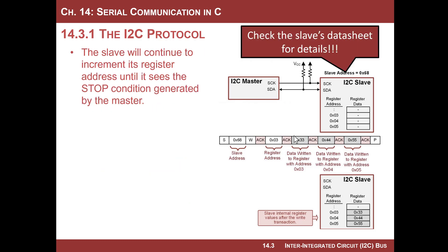Here's a warning: the slave will keep incrementing until it sees a stop, but you need to consult the slave's data sheet for edge cases. For example, if a device only has 16 registers and the master sends 50 bytes, you need to find out what happens. Some slaves are designed to roll back over to address 0 and start overwriting. Others will stop at the last address and ignore additional data. Slaves follow the I²C protocol but handle overrun cases differently.